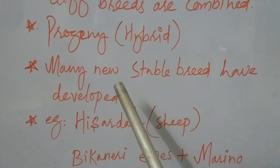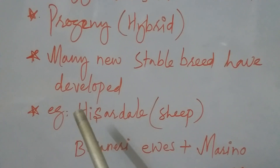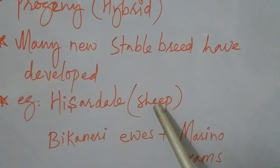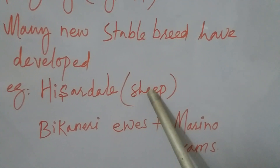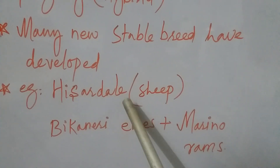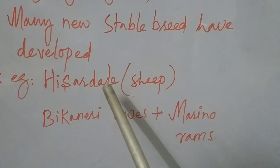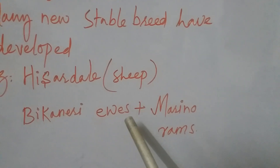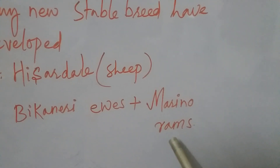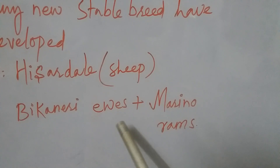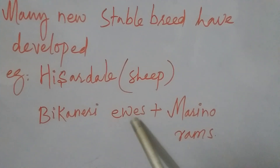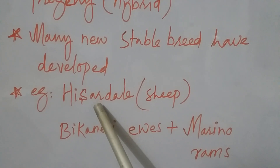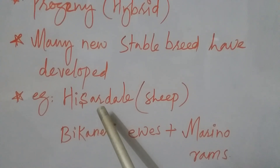An example of a hybrid breed is Hisardale, a new breed of sheep. This breed was developed by crossing Bikaneri ewes and Marino rams. So Bikaneri ewes and Marino rams were crossed to produce the new breed of sheep called Hisardale through cross-breeding.